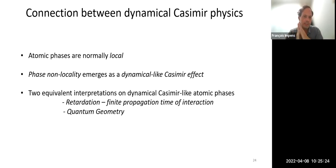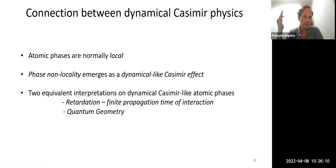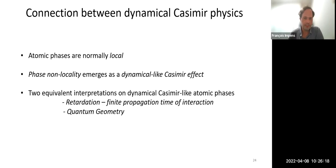As a consequence of this dynamical Casimir-like effect, you can obtain non-local phases, which is quite surprising for people used to atomic interferometry, where phases are normally local. This approach also enables bridging two different concepts: the concept of electrodynamic retardation — the fact that the interaction propagates at a finite speed between atom and surface — and the concept of quantum geometry, i.e., Berry phases. We will see that these are actually two sides of the same coin.